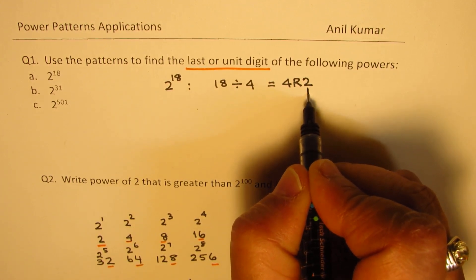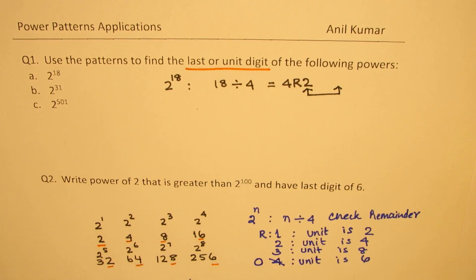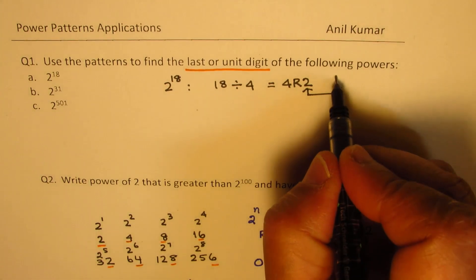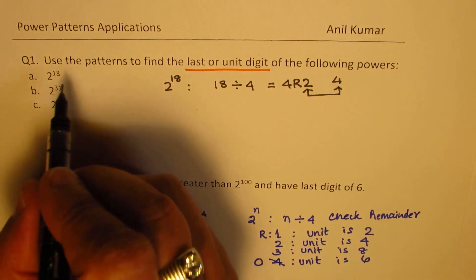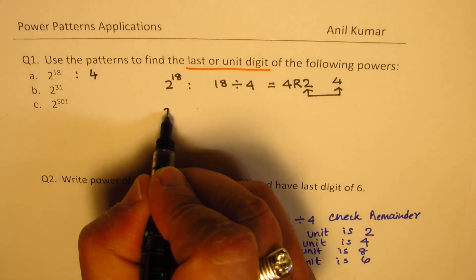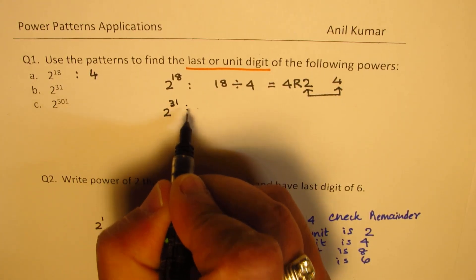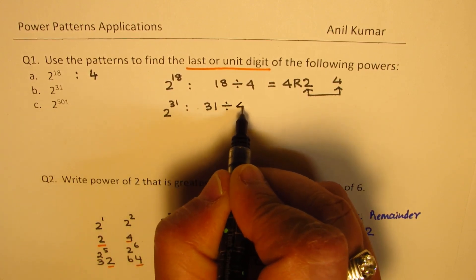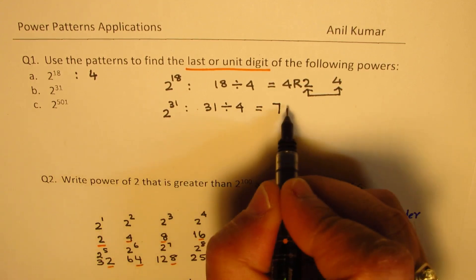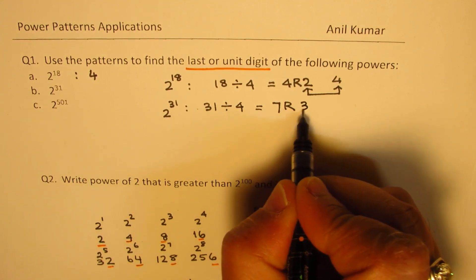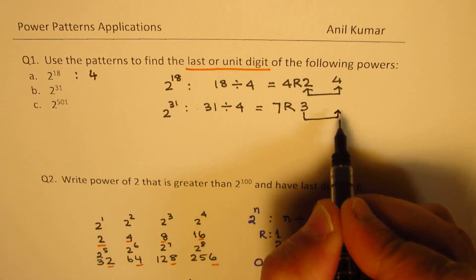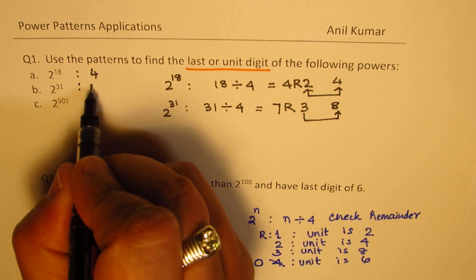Now, since the remainder is 2, so what is the last digit? For remainder 2, the last digit should be 4. So, we have 4 as our answer. So, the last digit in this case is 4. Now, in case of 2 to the power of 31, you have to divide 31 by 4. So, when you divide, 4 times 7 is 28, and the remainder is 3. For 3, the last digit is 8, and so we get the unit's place as 8. And so, this answer is 8.